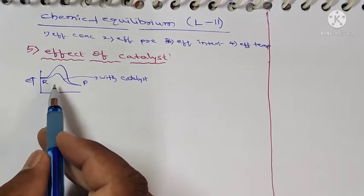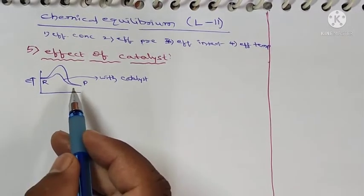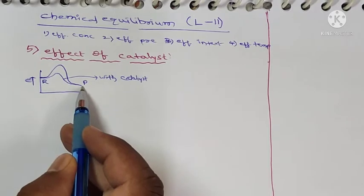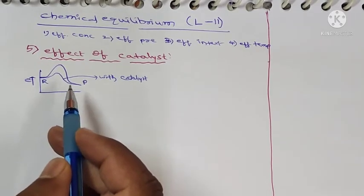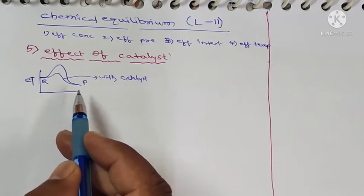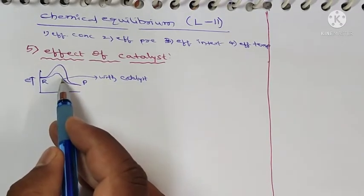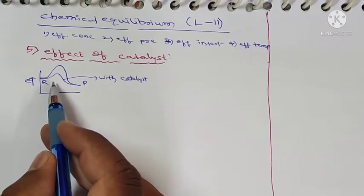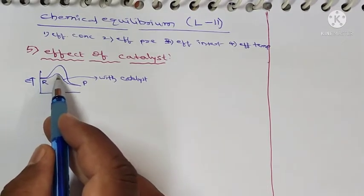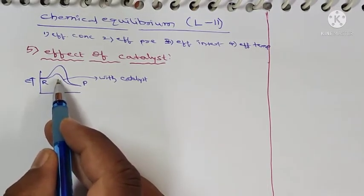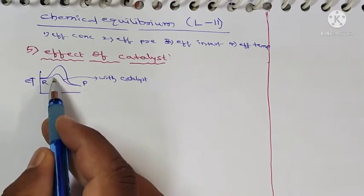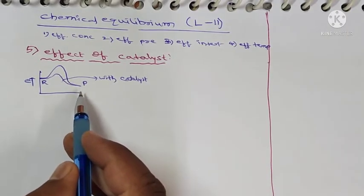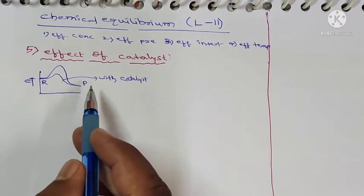The catalyst increases the rate of reaction, so the reaction in which a catalyst is used gives the product faster. A catalyst increases the rate of reaction and decreases the activation energy for both the forward reaction and the backward reaction. Consequently, it makes a new low energy pathway. This low energy pathway does not affect the equilibrium — the catalyst does not affect the equilibrium.